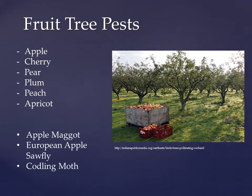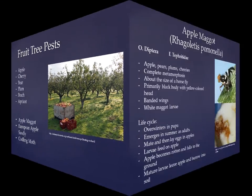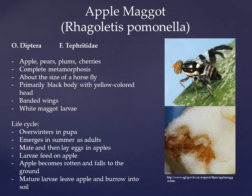These include the apple maggot, the European apple sawfly, and the codling moth. The first insect I will talk about is Rhagoletis pomonella, more commonly known as the apple maggot. The apple maggot falls under the order Diptera and the family Tephritidae. It is a pest to apple trees but has also been found to harm pear, plum, and cherry trees.